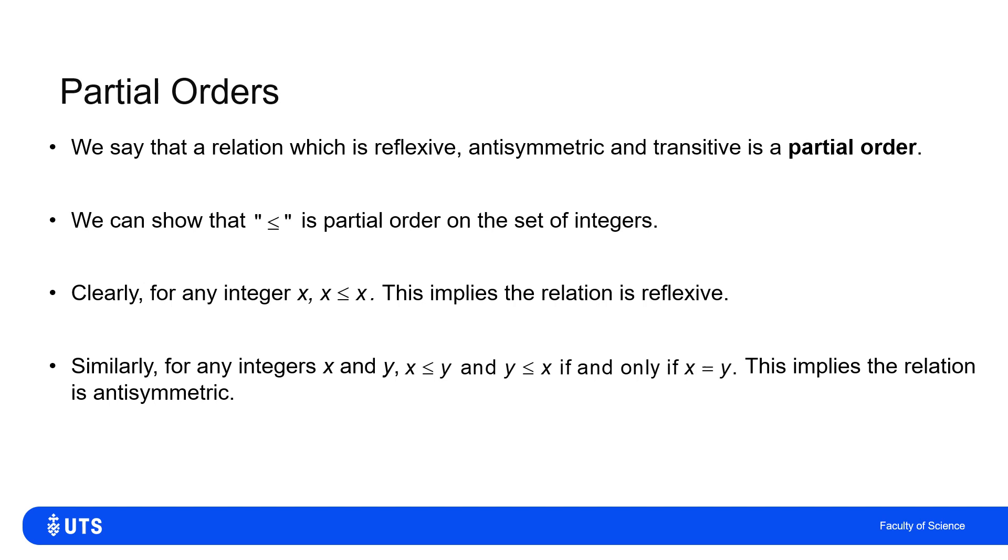In general, if I've got two different integers, then if X is less than or equal to Y and Y is less than or equal to X, well, the only way two values can both be less than or equal to each other is if they're equal to each other, if X is Y. So in that case, we have anti-symmetry.